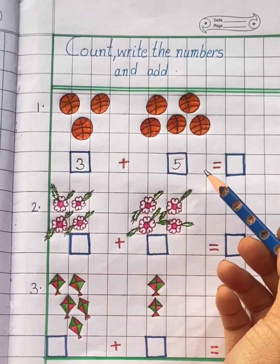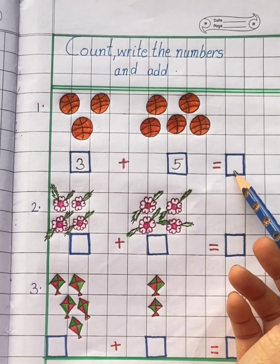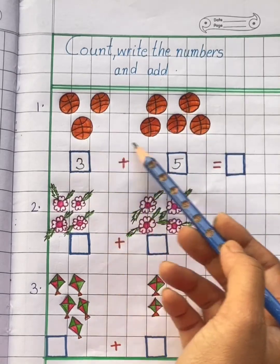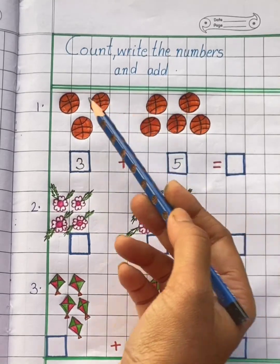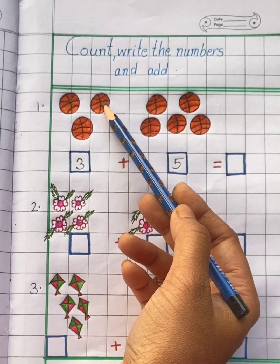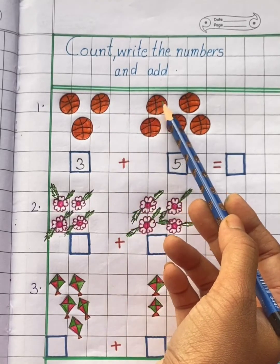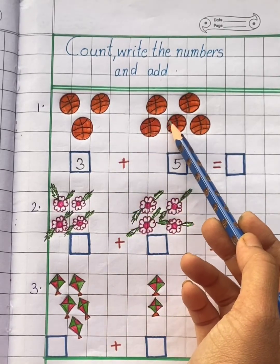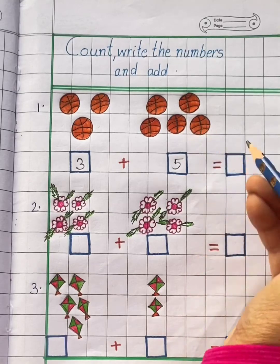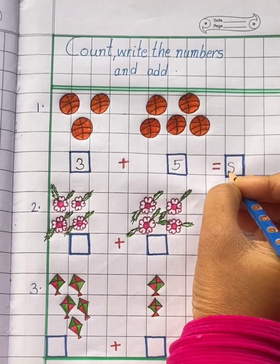Now we have to find the total number of balls. Now let's start counting the balls again. 1, 2, 3, 4, 5, 6, 7, 8. So total we have 8 balls.